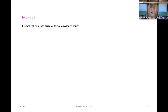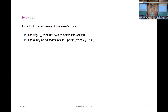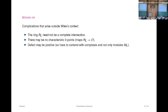Moving on—outside the Wiles context, some problems were encountered. The deformation ring need not be a complete intersection, which was important because the numerical criteria has a built-in criterion for CI. The second problem is that there may be no characteristic-zero points—no augmentations to O—which was important in even defining the congruence module. The other issue is that the defect may be positive, so one has to deal not just with modules M_sigma but complexes M_sigma.